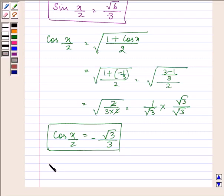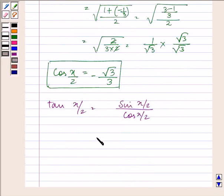Proceeding further to find out the value of tan(x/2), it will be sin(x/2) divided by cos(x/2).